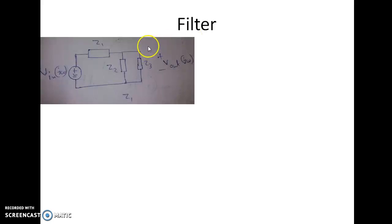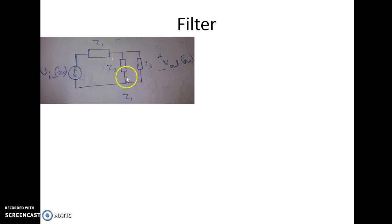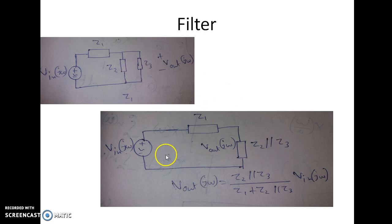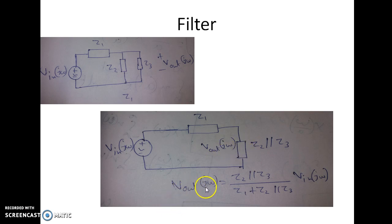Before that, I will give you one idea on how to solve this kind of circuit — how to calculate the transfer function V output of jω divided by V input of jω for a circuit where one impedance Z1 is in series and Z2 and Z3 are connected in parallel. You have to first take Z2 and Z3 as a parallel combination, calculate the parallel equivalence Z2 parallel with Z3, giving a circuit with V input of jω, Z1 in series with Z2 parallel Z3. From here we can easily get by the voltage divider rule: V output of jω equals Z2 parallel Z3 divided by Z1 plus Z2 parallel Z3, times V input of jω.